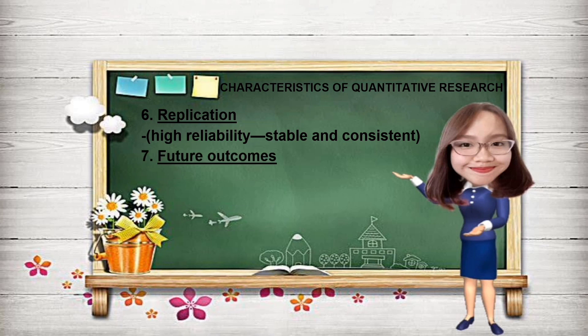Number 7: Future outcomes. By using complex mathematical calculations and with the aid of computers, if-then scenarios may be formulated, thus predicting future results. For example, quantitative research puts emphasis on proof rather than discovery. Those are the characteristics of quantitative research.